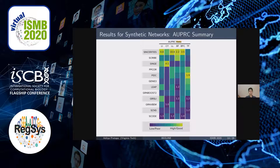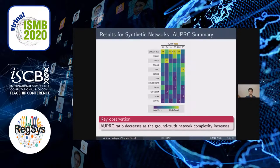In the summary figure, brighter colors represent high median AUPRC ratio and darker colors represent low median AUPRC ratio; numbers show the lowest and highest ratios in each column. SINCERITIES achieved the highest median AUPRC ratio for four out of six networks. Also, the top three performing methods all require pseudo-time-ordered cells as input. The key result is that the performance of all these methods decreases as the ground truth network's complexity increases.